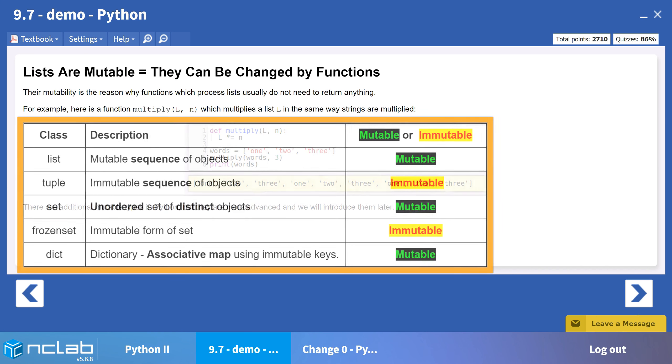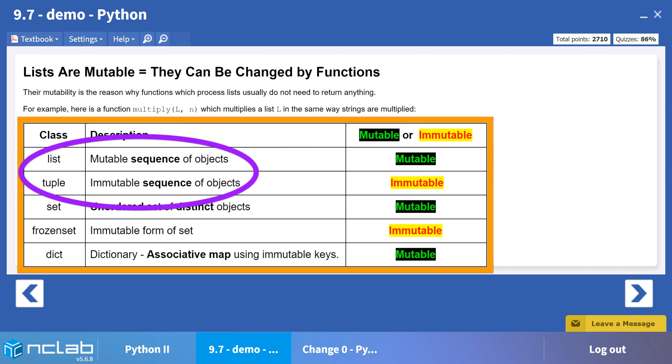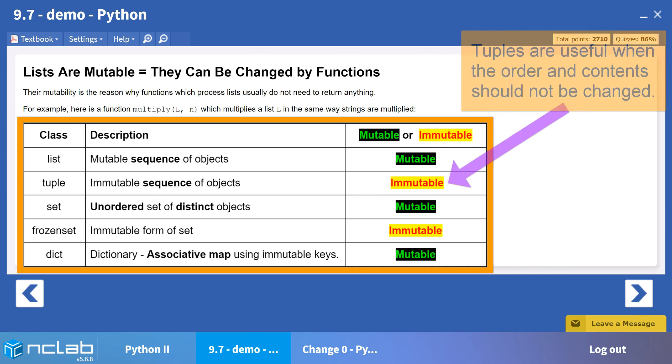You have already been introduced to lists, which are mutable, and tuples, which are immutable. Both are sequences of objects. In situations where we want to preserve the exact sequence in both number and order, we use a tuple.